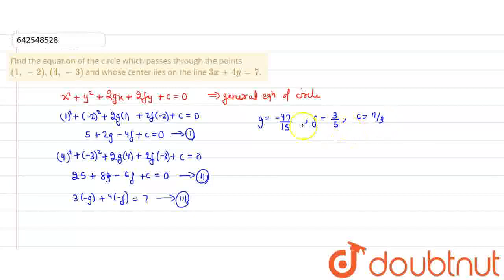When we substitute these values into the general equation of a circle, we get 15x² + 15y² - 94x + 18y + 55 = 0. This is our equation of the circle.